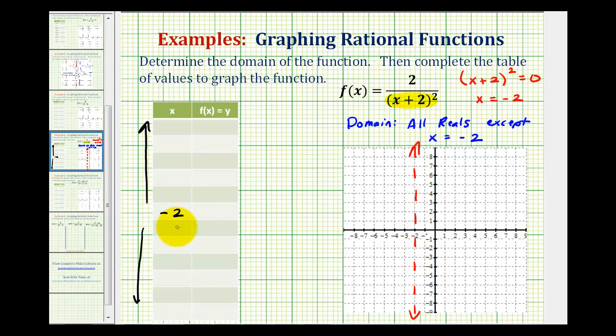But to start, we do want to select x values that are pretty close to -2. So for a value that's greater than -2, we'll use -1.5 to start. And for a value that's less than -2, we'll use -2.5. And then from here, let's go ahead and use -1, 0, and 1. And here we'll use -3 and -4.